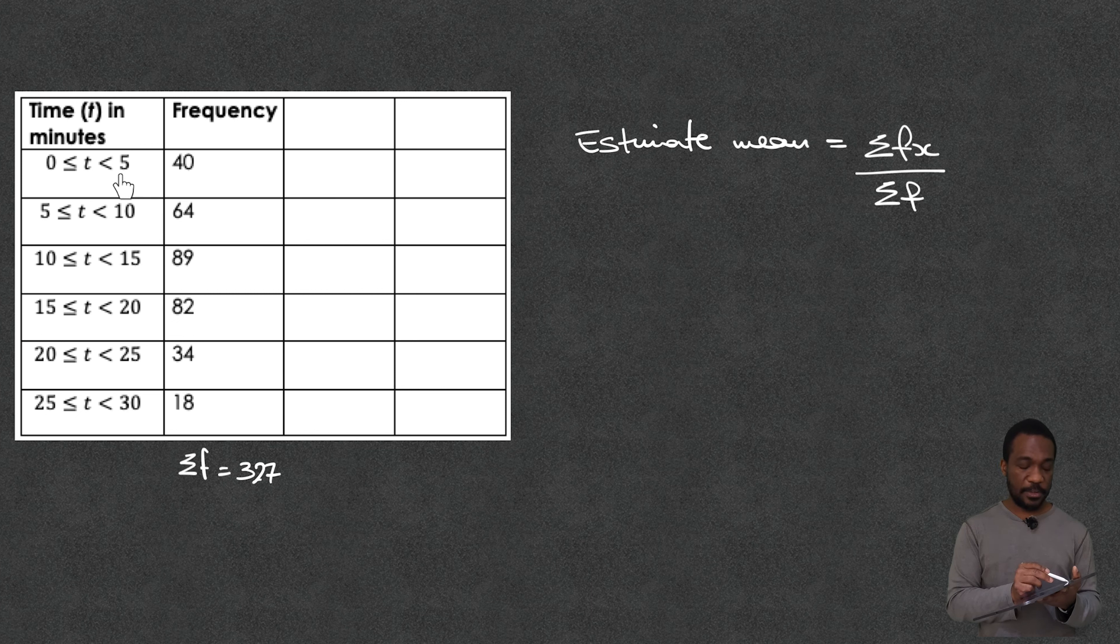So for example from 0 to 5 minutes I could have like 30 times somebody took two minutes to get there and then probably another two times they took four minutes and probably another one time they took a minute and so on but it adds up to 40. So because we don't know how the data has been spread out this is only going to always be an estimate.